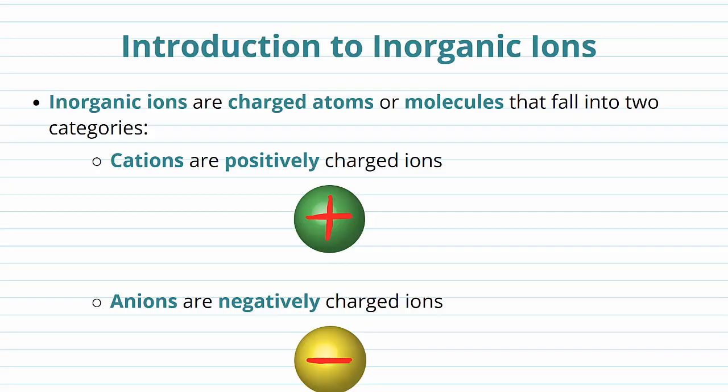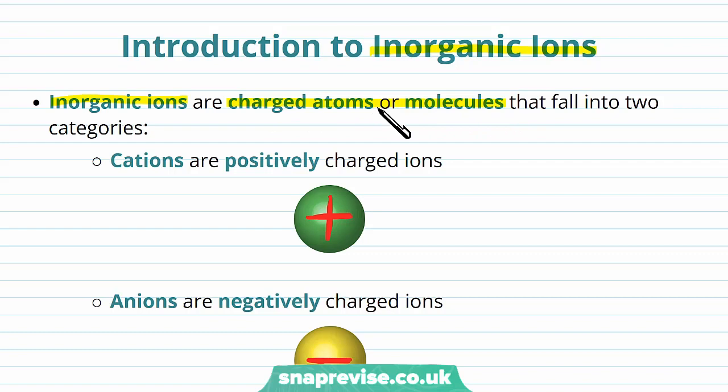Among all of the other different molecules that the body requires to function, inorganic ions should not be overlooked because they're very important for our function. An inorganic ion is basically any charged atom or molecule, or charged particle, that falls into two different categories. We can have cations, which are anything that's positively charged, and we can have anions, which are negatively charged.